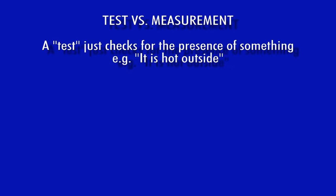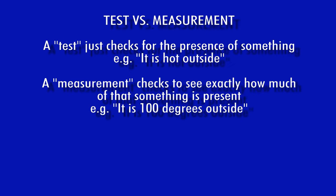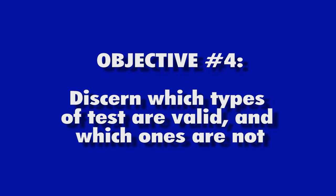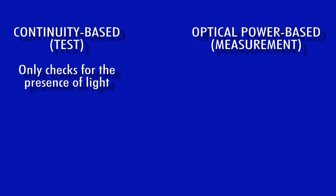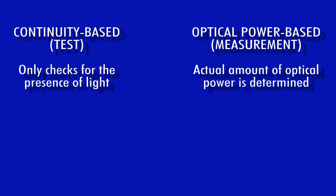A test simply checks for the presence of something — such as 'it is hot outside' — while a measurement tells you exactly how much of that something you have, such as 'it is over 100 degrees outside.' There are two basic categories of optical fiber testing: continuity-based tests and optical power-based measurements. Continuity is considered a test because it simply checks for the presence of light in an optical fiber, while optical power is a measurement because the actual amount of optical power is being determined. A fiber optic test can be performed without measuring anything, but a fiber optic measurement cannot be performed without continuity.